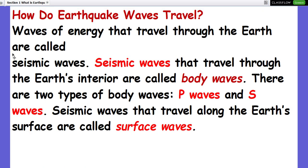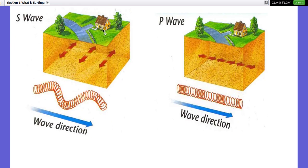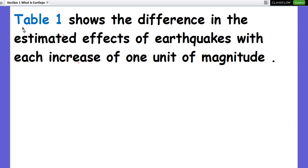How do earthquake waves travel? Waves of energy that travel through the Earth are called seismic waves. Seismic waves that travel through the Earth's interior are called body waves. There are two types of body waves: S waves and P waves.